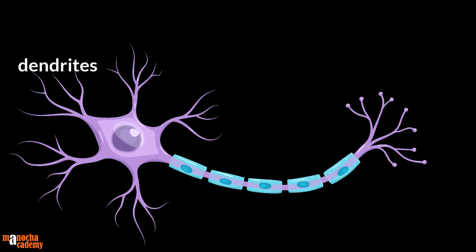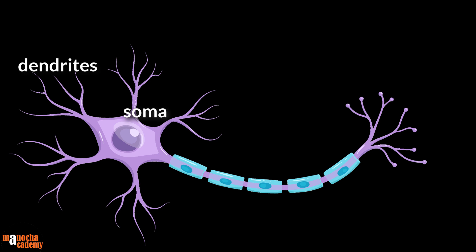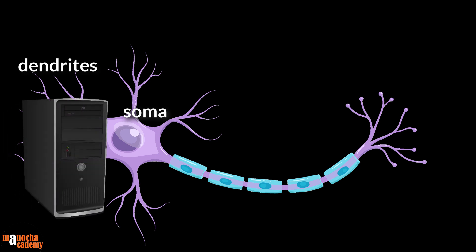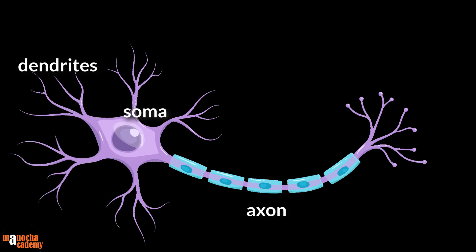Dendrites are the branch-like structures that receive the incoming signals. Dendrites act as the antenna of the neuron and their role is to receive the inputs. The cell body or soma is the central part of the neuron and it contains the nucleus. The soma is the processing unit — it processes all the inputs and produces an output. The axon is a long thin projection that extends from the cell body, and the job of the axon is to transmit the output.